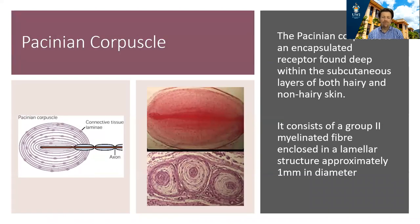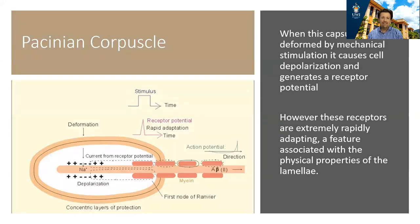You can see both a drawing of a Pacinian corpuscle and also a cross section using a microscope of what the Pacinian corpuscle actually looks like. The Pacinian corpuscle has a modified nerve ending in which the nerve ending is surrounded by a series of lamellae. It consists of a group 2 myelinated fiber and its total size is actually very large, almost a millimeter in diameter.